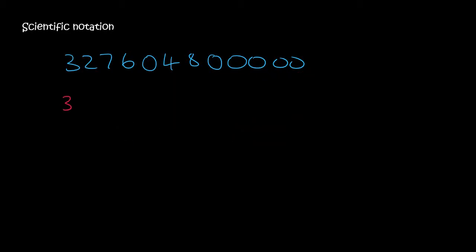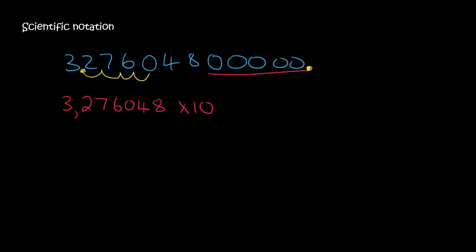So you're going to say 3, and then remember scientific notation is always the comma after the first number, then you're going to write all the numbers until you get to the point where there's only zeros — then you don't write those down. Then you say times 10, and you just need to see how many places. The decimal place in the first number is over here, now it's over here: 1, 2, 3, 4, 5, 6, 7, 8, 9, 10, 11. So we'll put 11 over there.